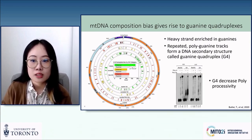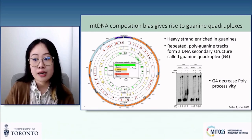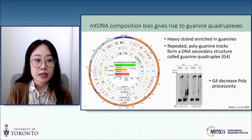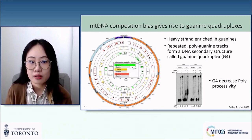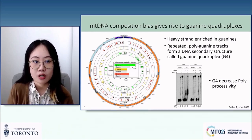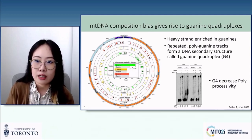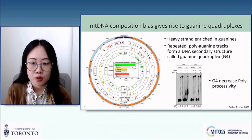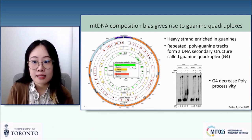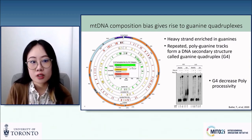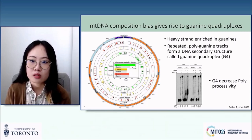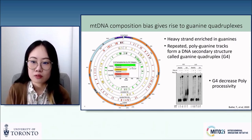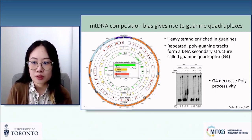G4 structures have been shown to decrease polymerase processivity, especially of pol gamma, which is the mitochondrial polymerase. Shown here is a polymerase stop assay. We can see that with the addition of both pol gamma subunits, we get nice extension of a non-G4 sequence. However, with the G4 sequence, we instead get a lot more of the shorter stopped products.